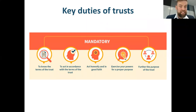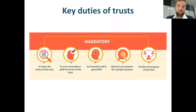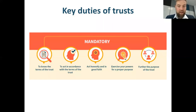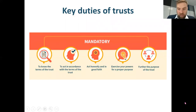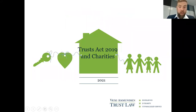Where we see things go wrong in charities, most of the time it is where a charity loses sight of its charitable purpose and allows private benefits or other interests to interfere with decision making. It's always worth reflecting: are we doing something because we've always done it, or is it because of our purpose? Understanding what your purpose is and what powers you have to carry out that purpose are essential if you're going to carry out your duties as trustees. I'll now pass over to Vicky to talk about the Trusts Act and what has changed.